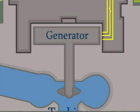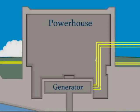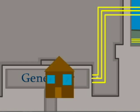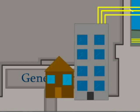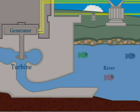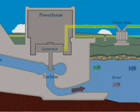The generator is located in a powerhouse, which houses a bunch of other generators. Power lines are connected directly to the generator to give direct feeds to homes and businesses. After the water leaves the turbine, it will flow back into the river.